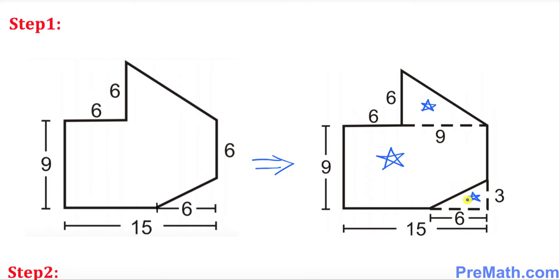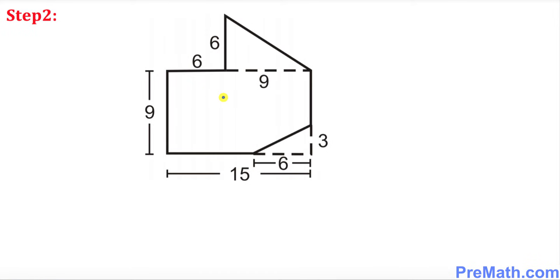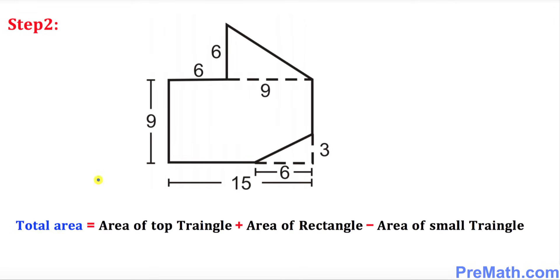Before we find the area of these individual shapes, we want to establish the formula for the total area of this shape. The total area equals the area of the top triangle, plus the area of the rectangle, minus the area of the small triangle — because that part is excluded. Both triangles are right triangles.